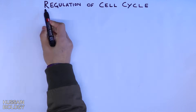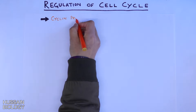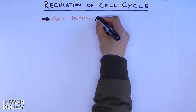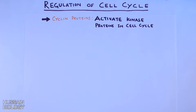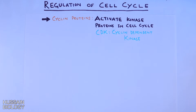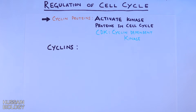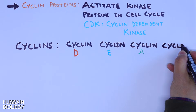First of all, what regulates the cell cycle? It is the cyclin proteins. These cyclin proteins activate the kinase proteins in the cell cycle, known as cyclin dependent kinases. We have four different cyclin proteins: cyclin D, cyclin E, cyclin A, and cyclin B.